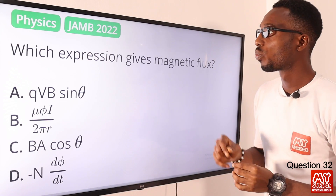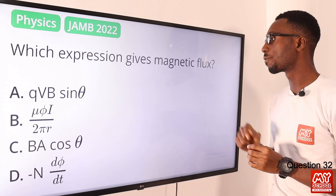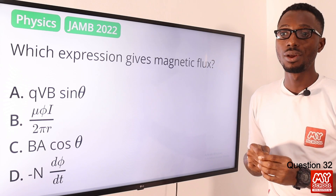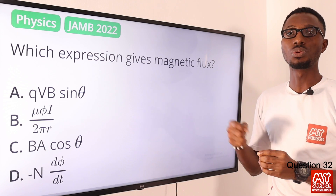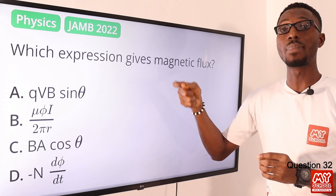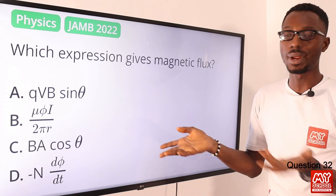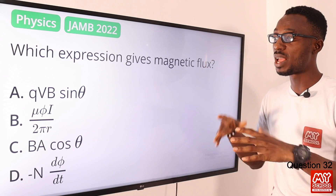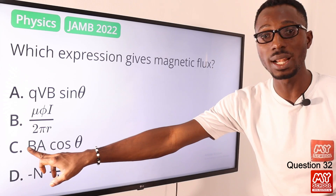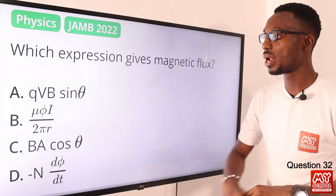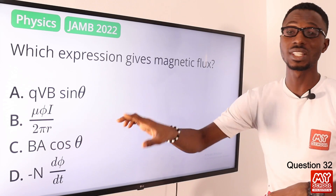Question 32. Which expression gives magnetic flux? Magnetic flux can be measured in Weber. We are looking at the relationship between the amount of magnetic field that travels perpendicular to the area — the relation between magnetic field B and area A. The correct expression is BA cos θ, found in option C.